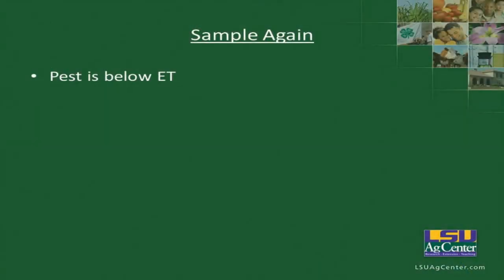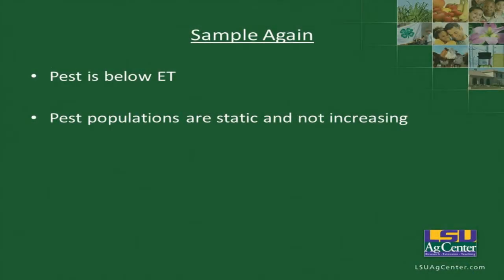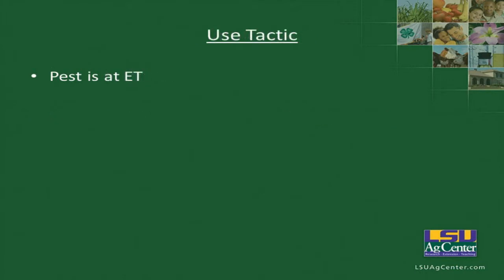You may have to sample again because your pest is below the economic threshold. Remember, the economic threshold is the level at which you apply the control tactic — because by the time the pest reaches the economic injury level, you want to have controlled it before it causes that damage. You may also need to sample again if pest populations are static and not increasing. When it comes to using a tactic, the pest has reached the economic threshold. For example, for southern green stink bug, the threshold is 36 bugs per 100 sweeps — so if you've done 100 sweeps and collected 36 bugs, it's time to use a control tactic.